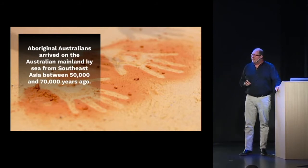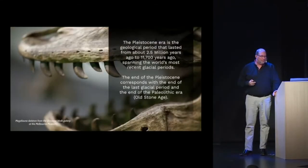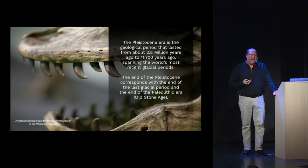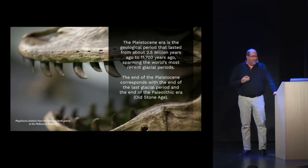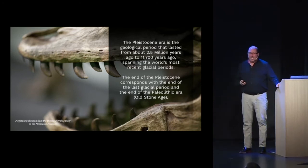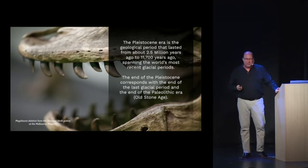Aboriginal Australians first came to the continent from Southeast Asia about 50,000 to 70,000 years ago. The Pleistocene era was one of the largest geological periods, going from 2.5 million years ago to 11,700 years ago, which marks the end of the last ice age. This corresponds with what we would call the old stone age — Paleolithic versus Neolithic, which is the new stone age.